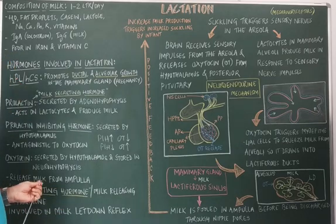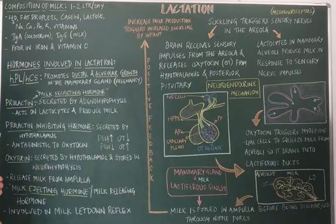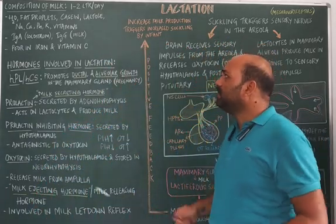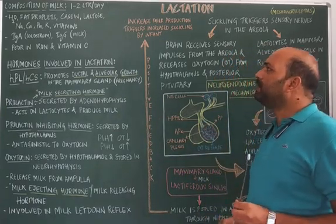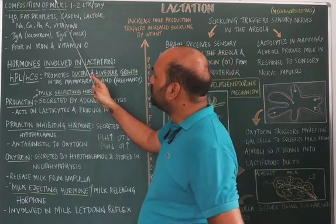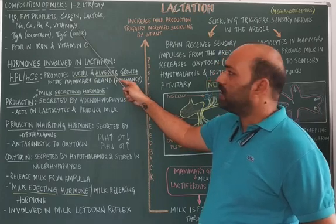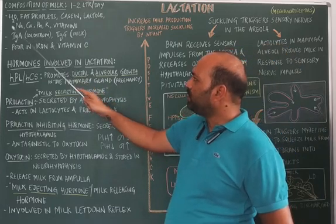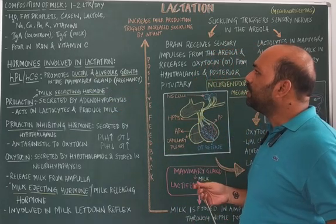The milk secreted by the mammary gland consists of water, fat droplets, milk protein called casein, milk sugar called lactose, and various inorganic components such as sodium, calcium, phosphorus, potassium, as well as vitamins. The mother produces around 1 to 2 liters of milk every day.